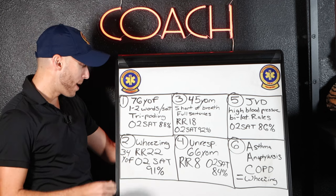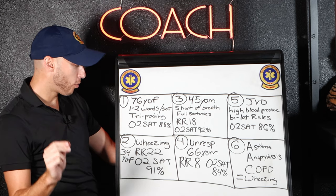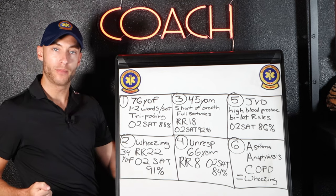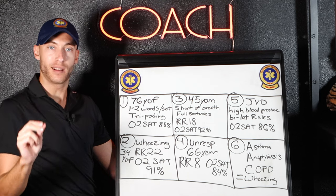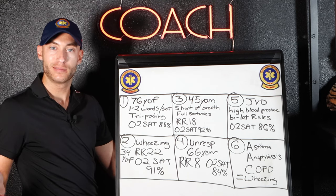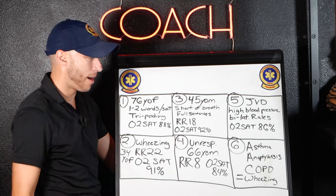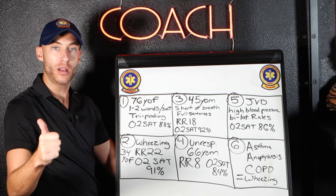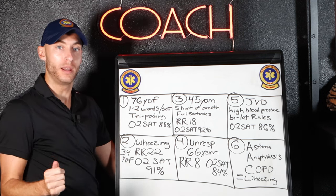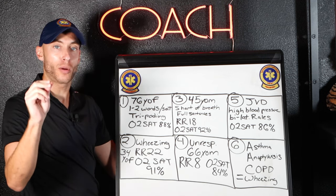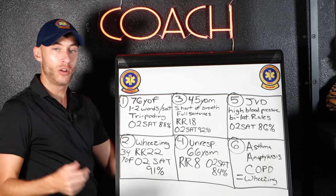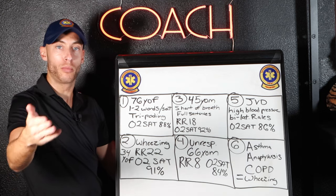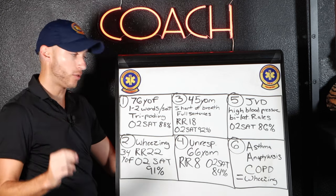Number two: a patient who is wheezing with a respiratory rate of 22, O2 sat 91%, 34-year-old female. As soon as you hear wheezing, think AAC — that's my mnemonic. A: asthma, A: anaphylaxis, C: COPD. Those are your patients that wheeze. So what do they need? They need a neb — that's going to be your duoneb, your albuterol.